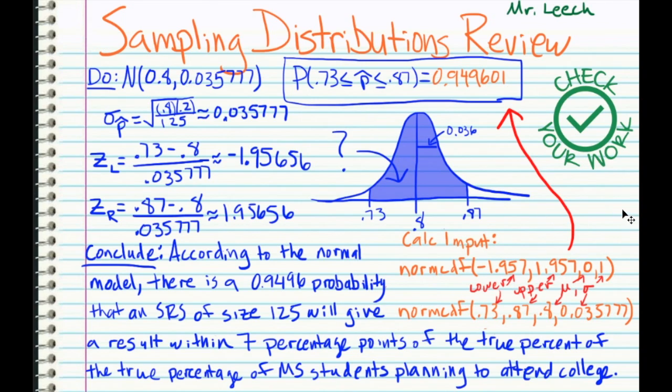So then our final answer, make sure to put it in context. Really, we're just regurgitating the question of interest with our answer in it. So for my conclusion, I have according to the normal model, there is a 0.9496 probability that an SRS of size 125 will give a result within seven percentage points of the true percentage of middle school students planning to attend a college.